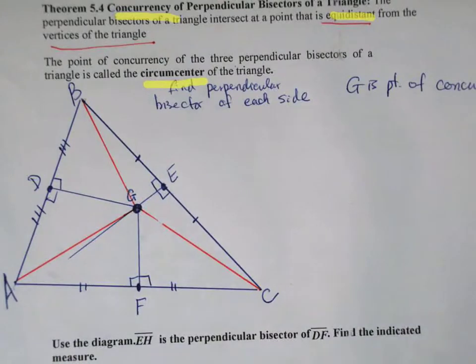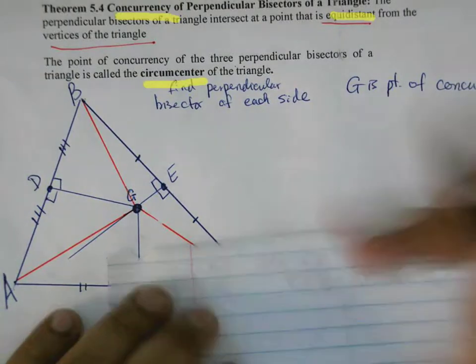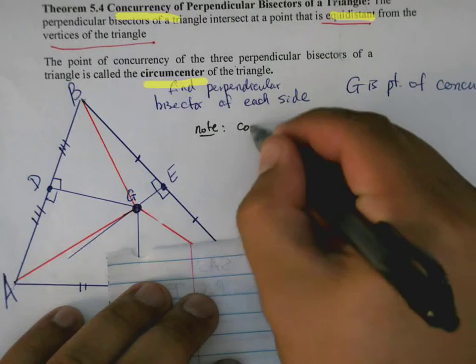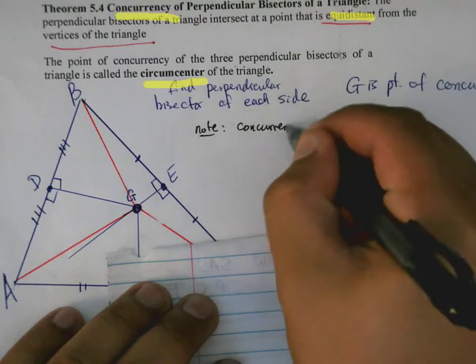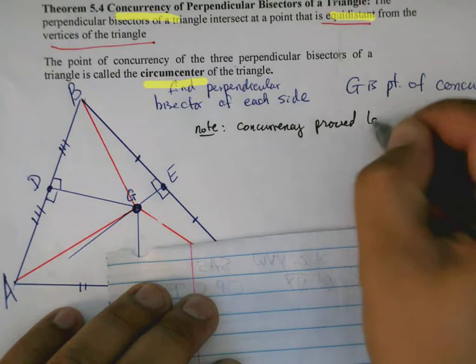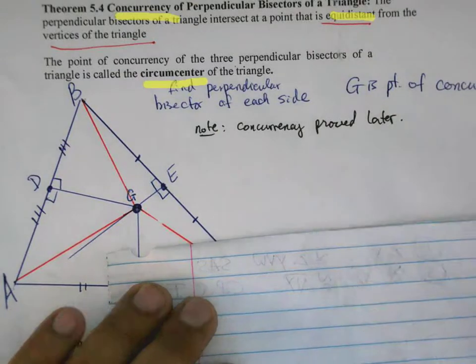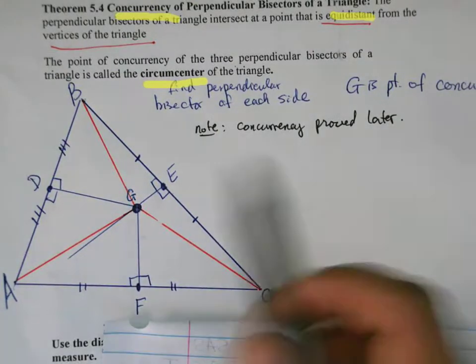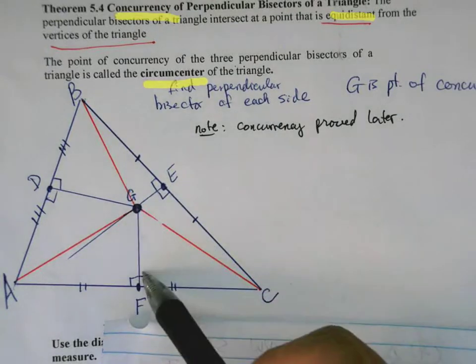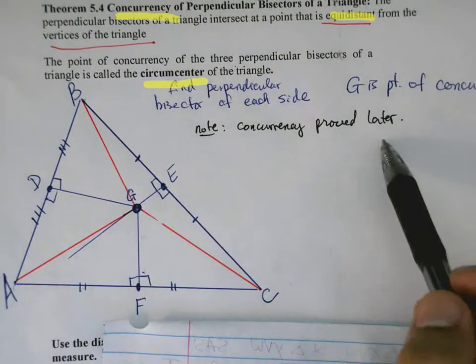And again, there's actually multiple parts of this proof. So we'll make a note here. Note, the concurrency will be proved later. That's actually a very difficult and highly technical proof. So we need to first show that all three of the perpendicular bisectors will intersect, and we're going to do that later. What we're going to do, so this is part one. What we're going to do here is prove part two.